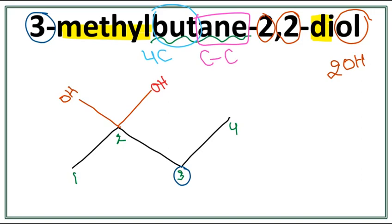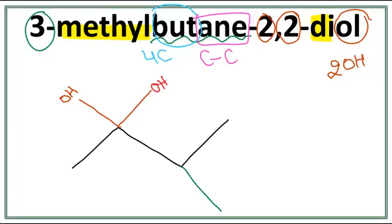So let's get rid of these numbers and attach the methyl on the third carbon. This is the structure for 3-methylbutane-2,2-diol.